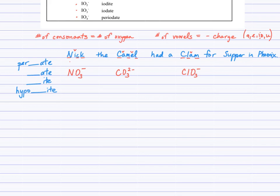Nick the camel had a clam for supper. So we'll start with the S, and we're getting sulfate out of this. How many oxygens are there? Well, how many consonants? One, two, three, four. How many vowels? One, two. There we go. Sulfate.